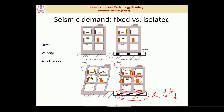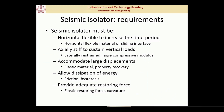Now, what should be the requirements of a seismic isolator? The isolator must be horizontally flexible to increase the time period, because only with an increase in time period will there be a reduction in seismic forces and acceleration. To achieve horizontal flexibility, we can use horizontally flexible material or a sliding surface. A sliding surface means very small — almost negligible — stiffness in the horizontal direction.